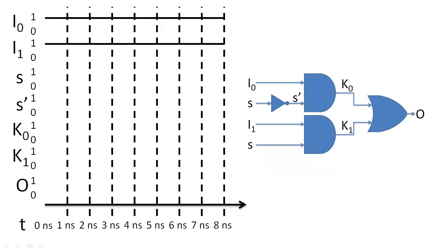On this timing diagram, we have a test input where the data inputs of the multiplexer are held at a constant 1, and we change only the selection input at 3 ns and 5 ns.